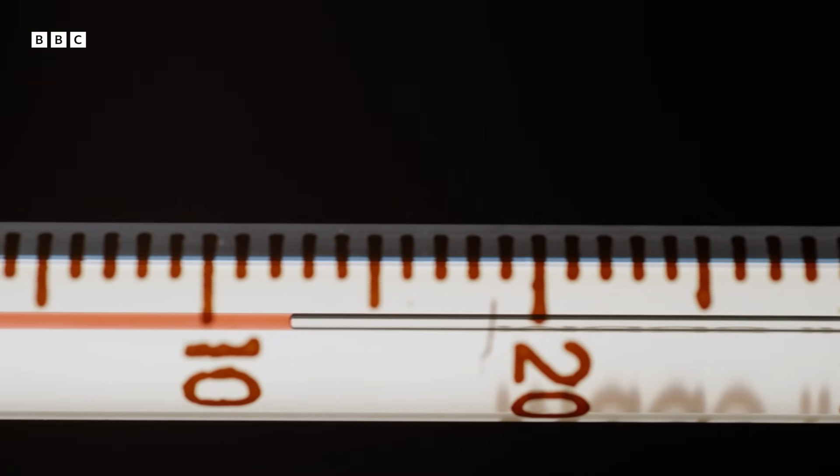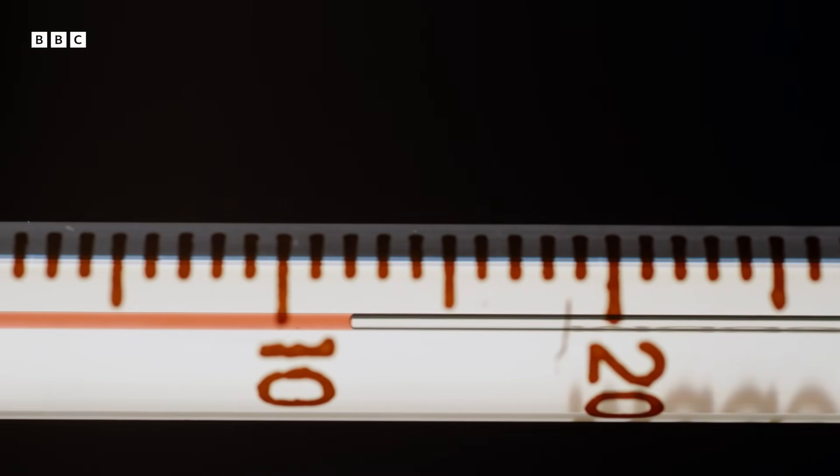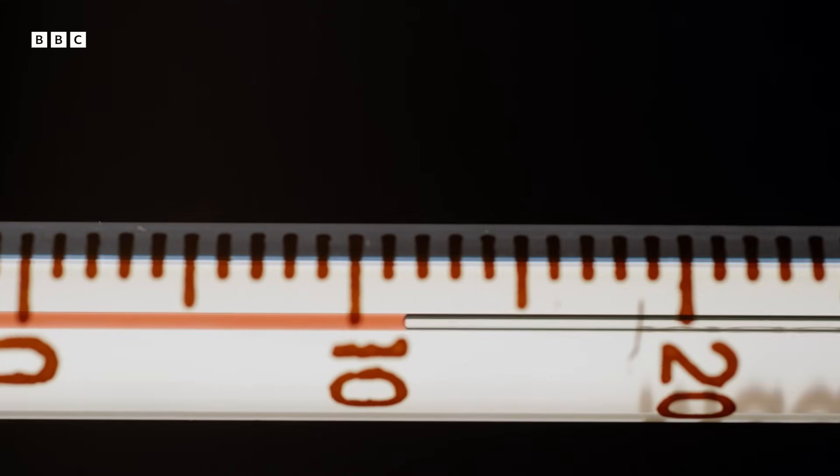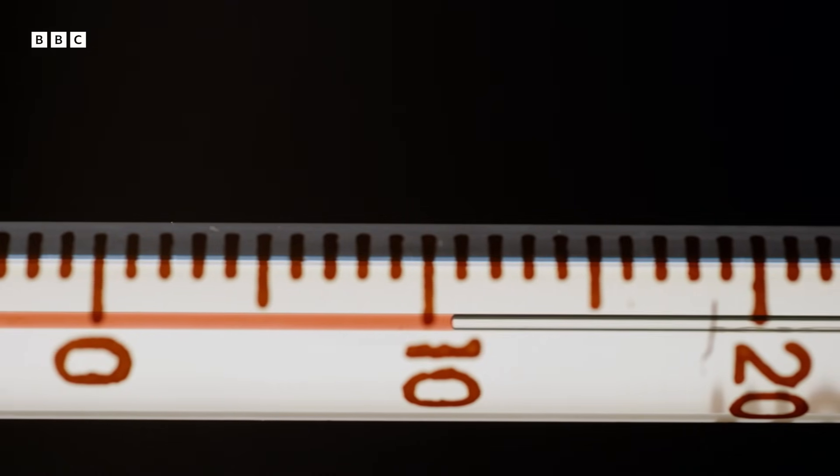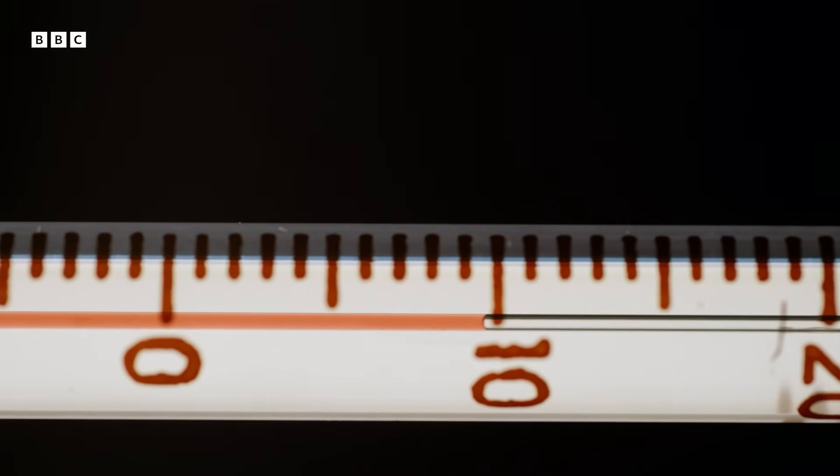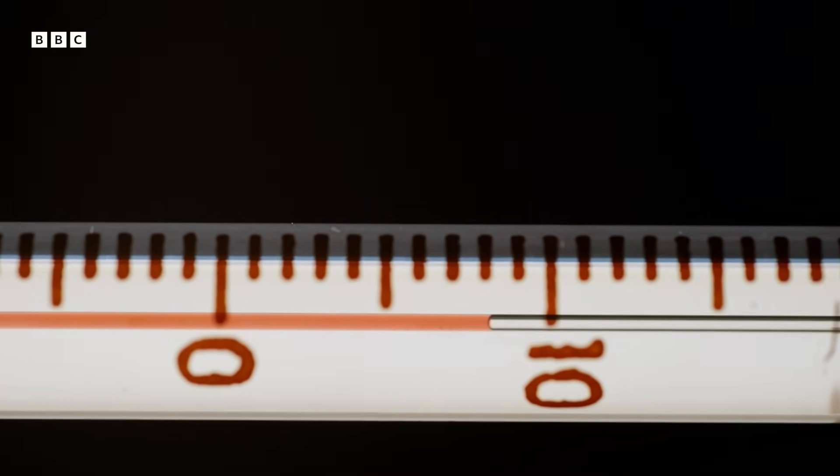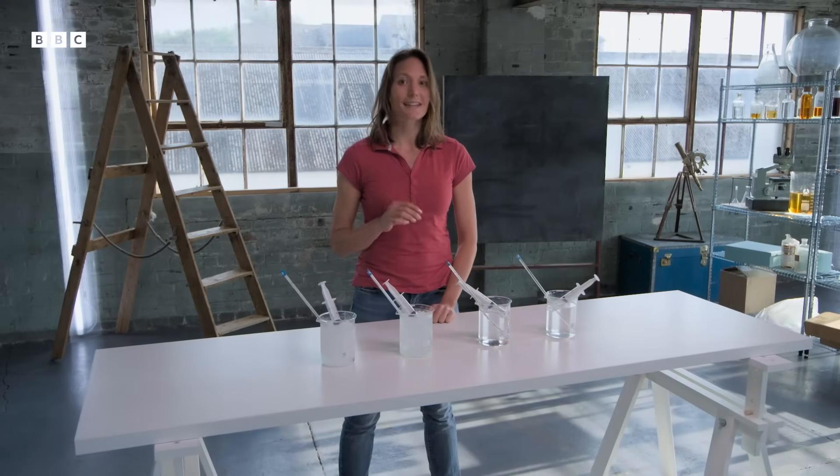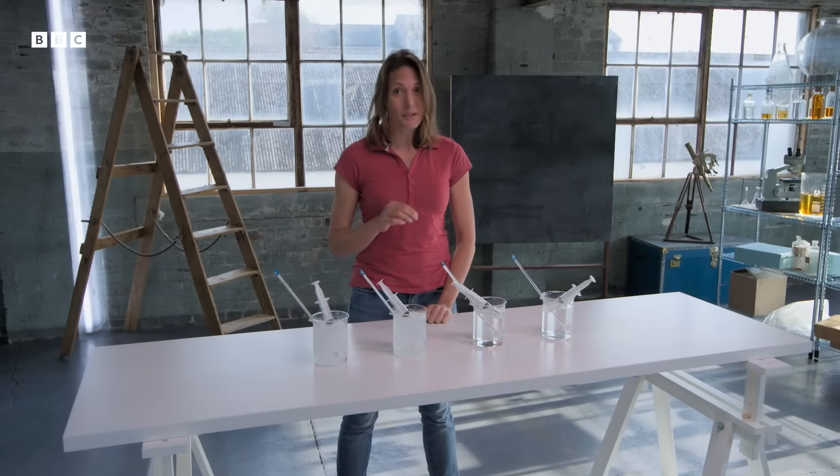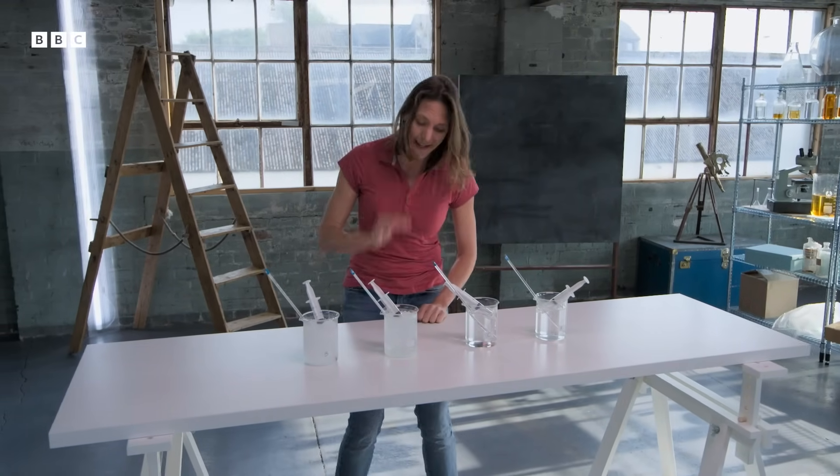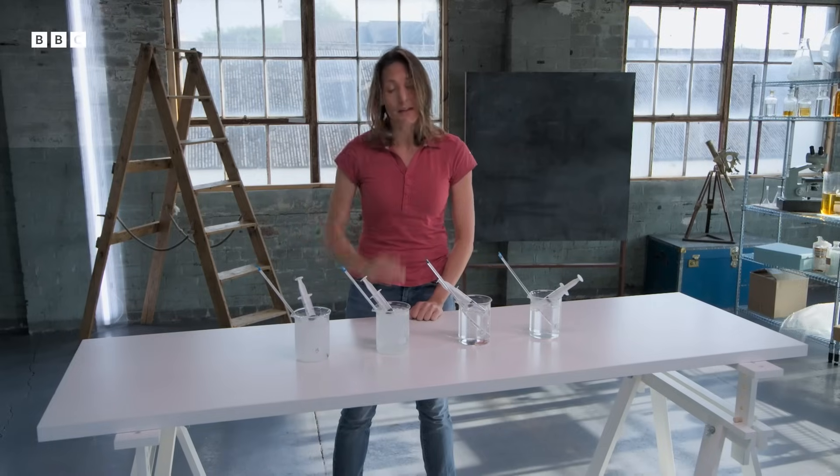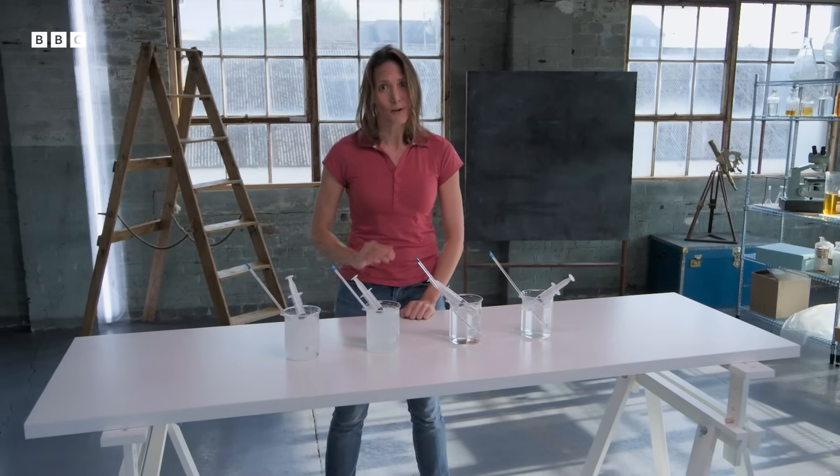This observation led to a concept known as absolute zero, the theoretical limit of cold. And now we know exactly what it is. On the Celsius scale it's minus 273.15, a fantastically low temperature. But below that there's nowhere to go. That's the coldest you can get.